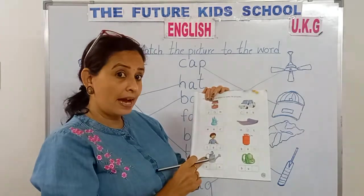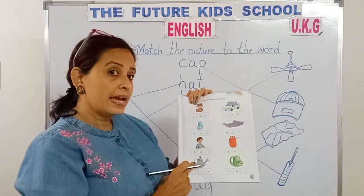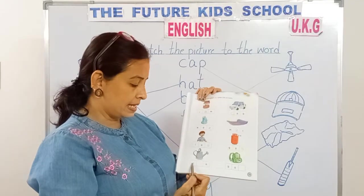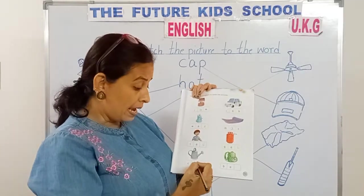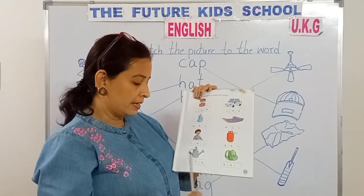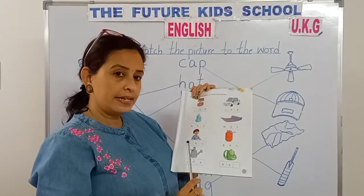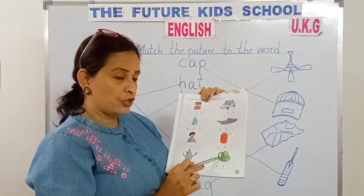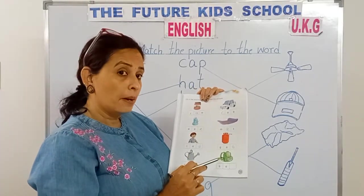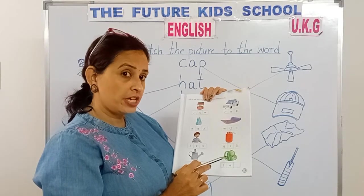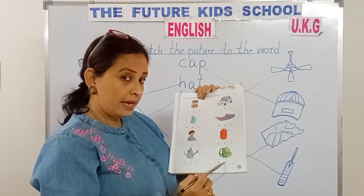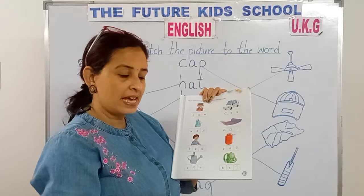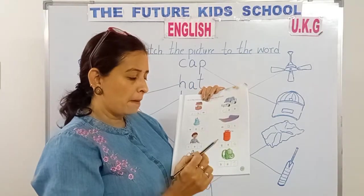This is a can. C-A-N spells can. C-A-N — the missing letter is N. C-A-N, can. This is a picture of a bag. B-A-G. B-A-G — A-G is the missing letter. B-A-G, bag.